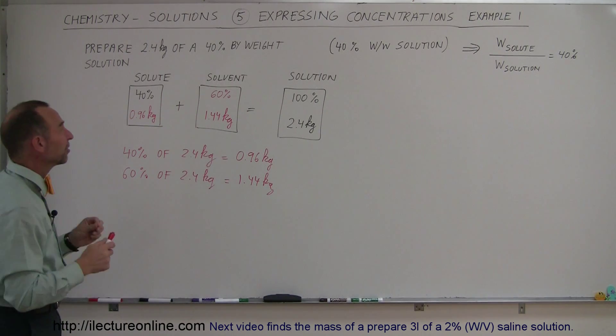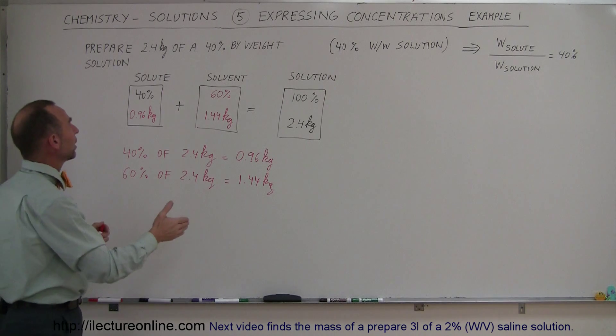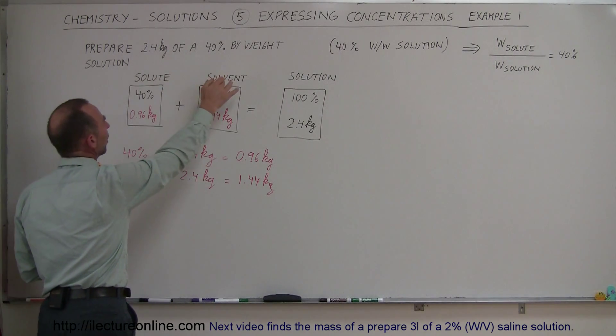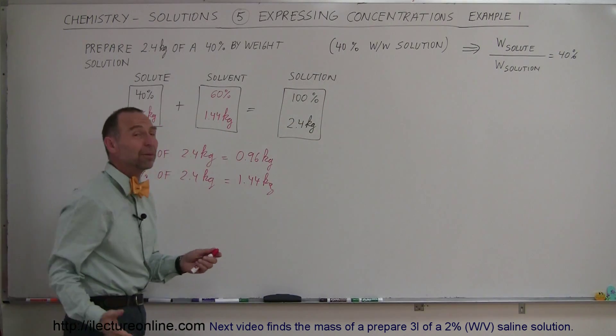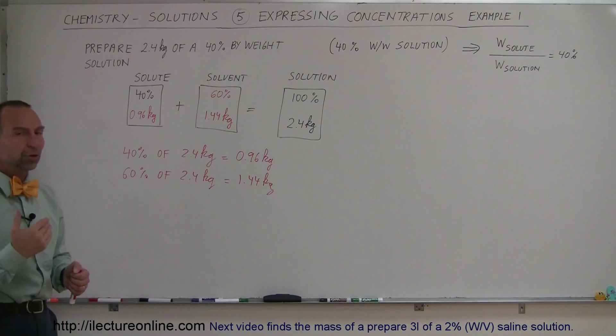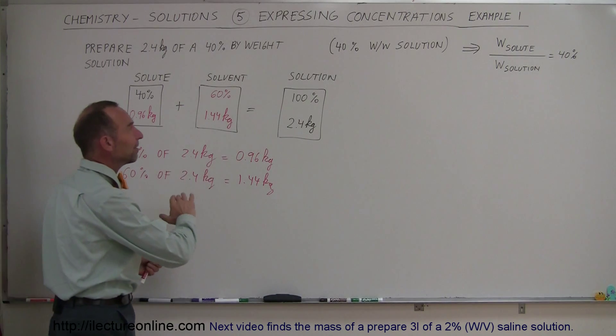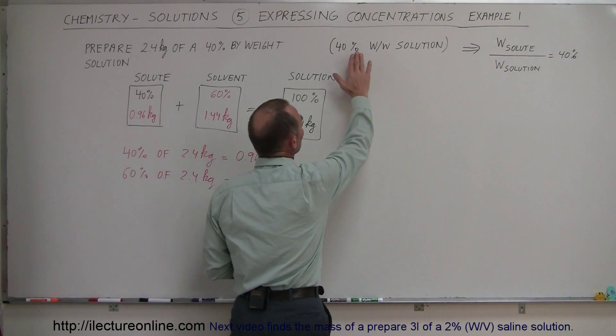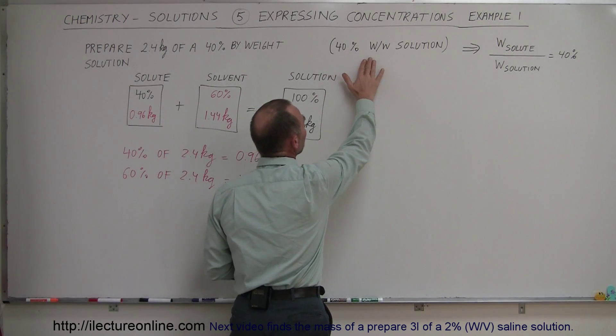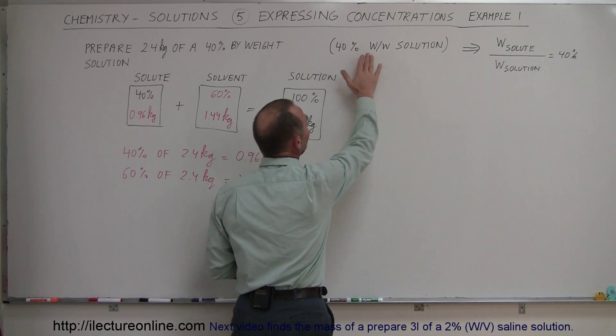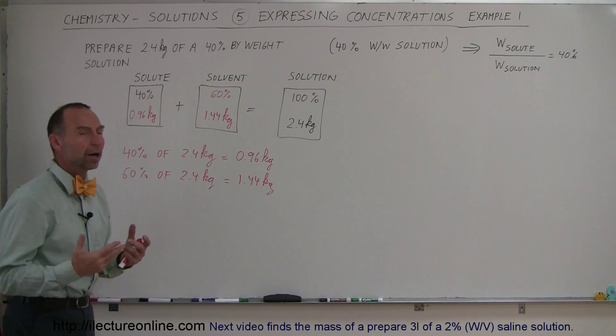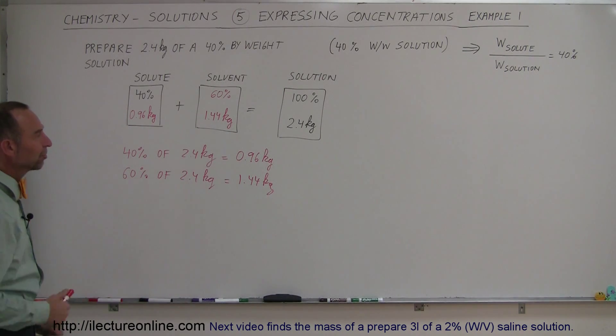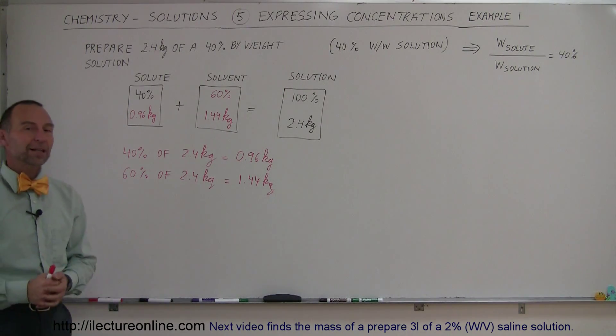Notice that quite often the mistake is made that you'll take 2.4 kilograms of solvent and add the solute to that, but then you don't get 2.4 kilograms of solution. The reference always is the solution. In this case, it's weight in weight, so 40% of the weight of the total solution is the solute, and 60% has to be the solvent, that makes for a 100% solution. And there's a nice little example to hopefully make that clear for you.